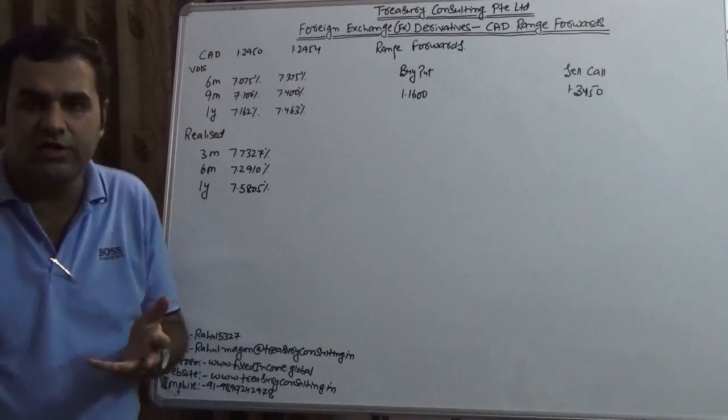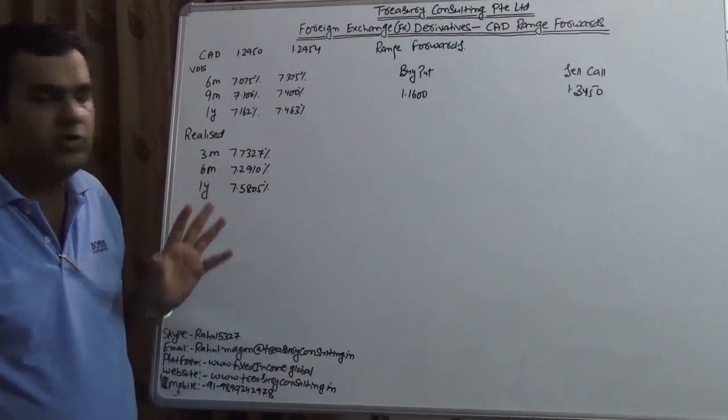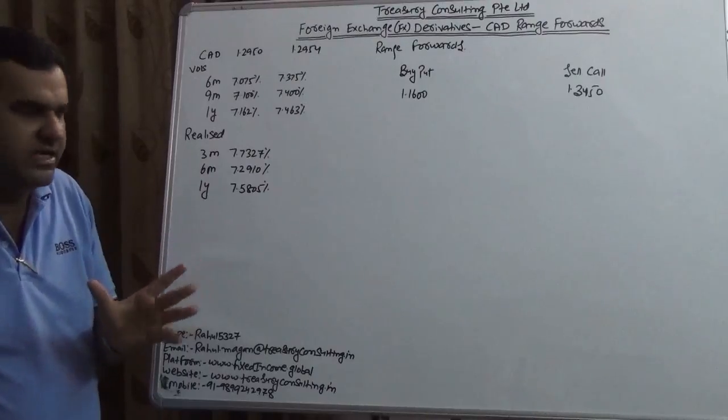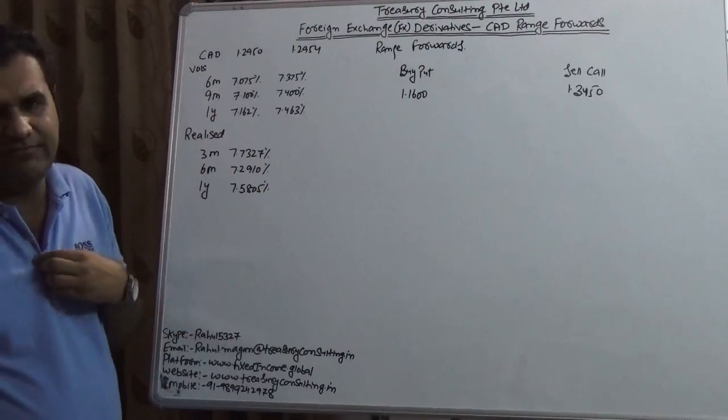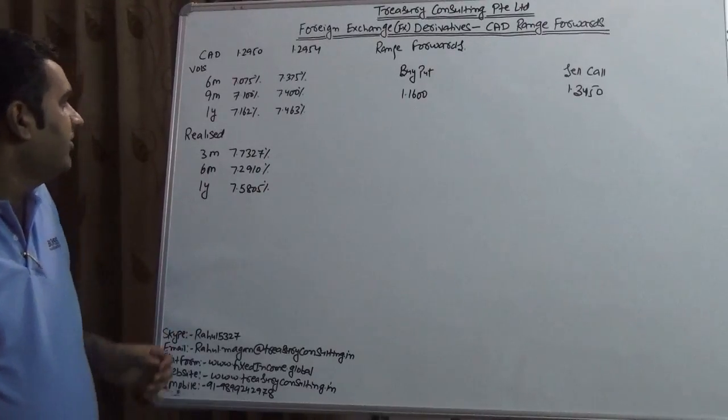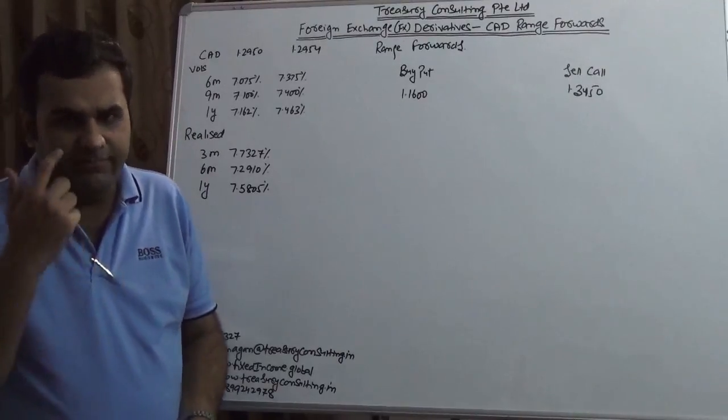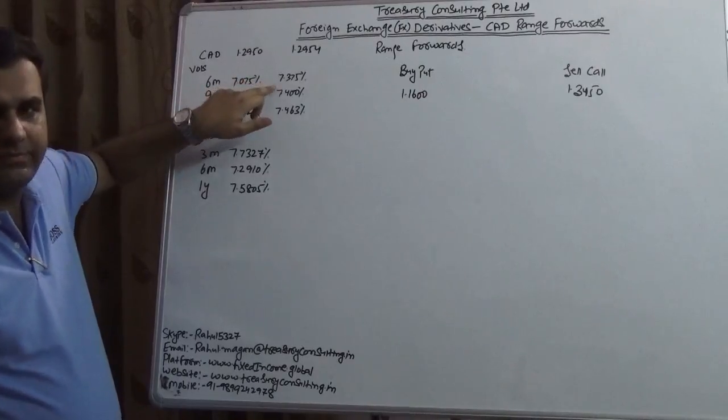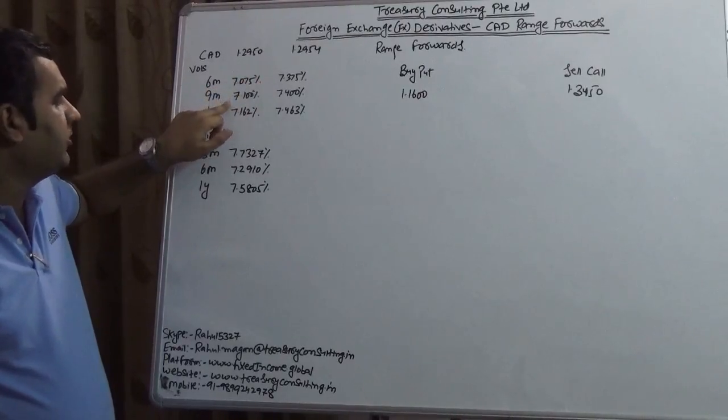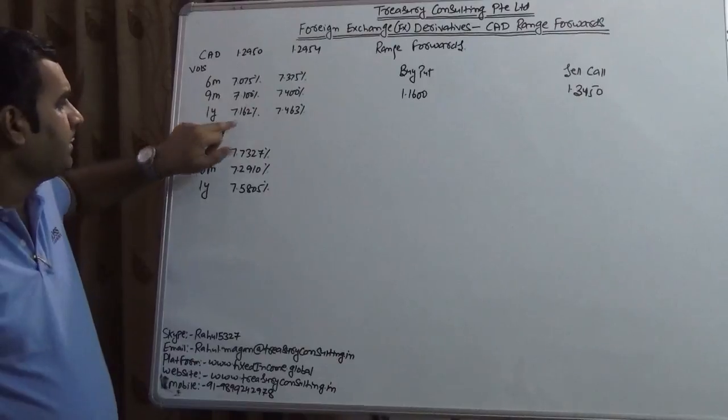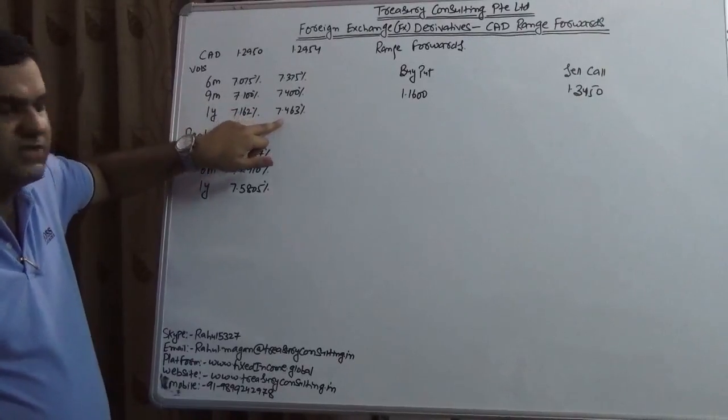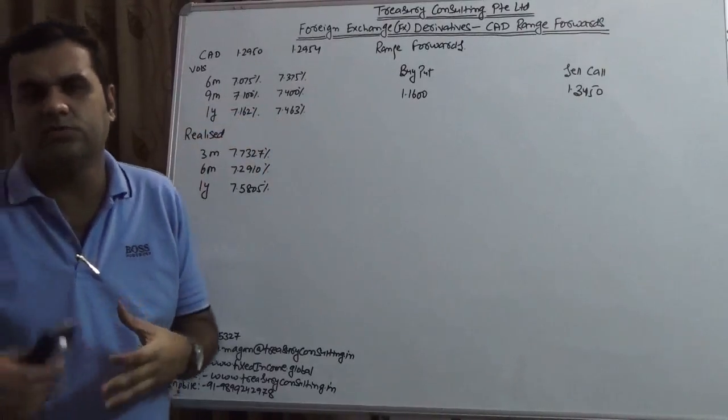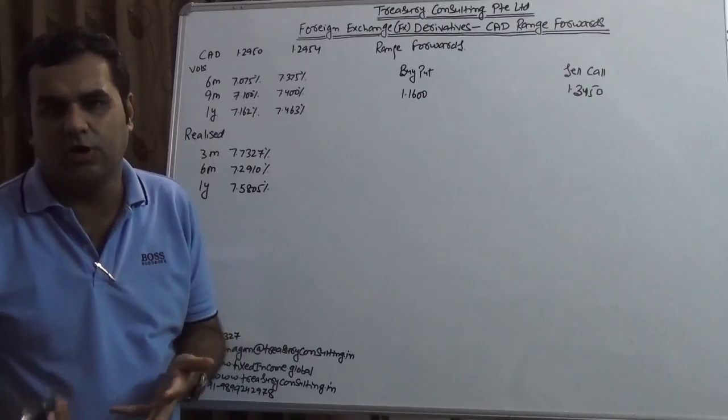So today if you have 100 dollars, you have approximately 129 CAD at the side you take it, 129.5 something like that. We have taken few volatilities from live Bloomberg terminal which is the implied vol. Six months is 7.07, here it is 7.37. Here it is 7.1, here it is 7.4. Here it is 7.1 and here it is 7.46. These implied vols would help you to price the option contracts.